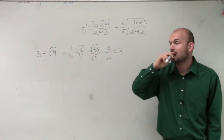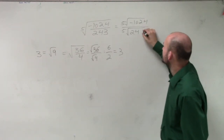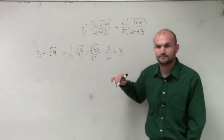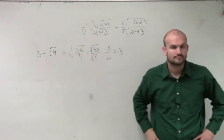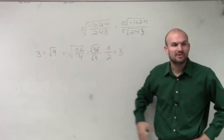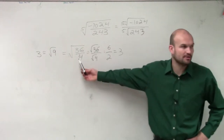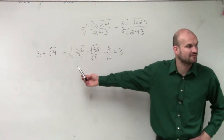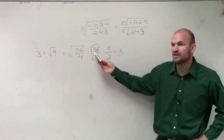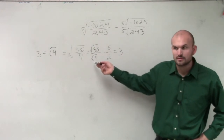It went from 243 to 242 — that's just my mistake. Does everybody understand what I did here? Does everybody understand that the square root of 36 divided by 4 is the same thing as breaking up into the square root of 36 divided by the square root of 4?